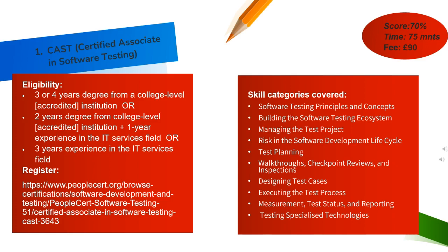The CAST exam passing score is 70%. The exam duration is 75 minutes and the fee is 90 pounds. This is an online exam. Job profiles for this certification include: Senior Quality Assurance Engineer, Senior Test Engineer, Test Analyst, and Senior Test Automation Engineer.